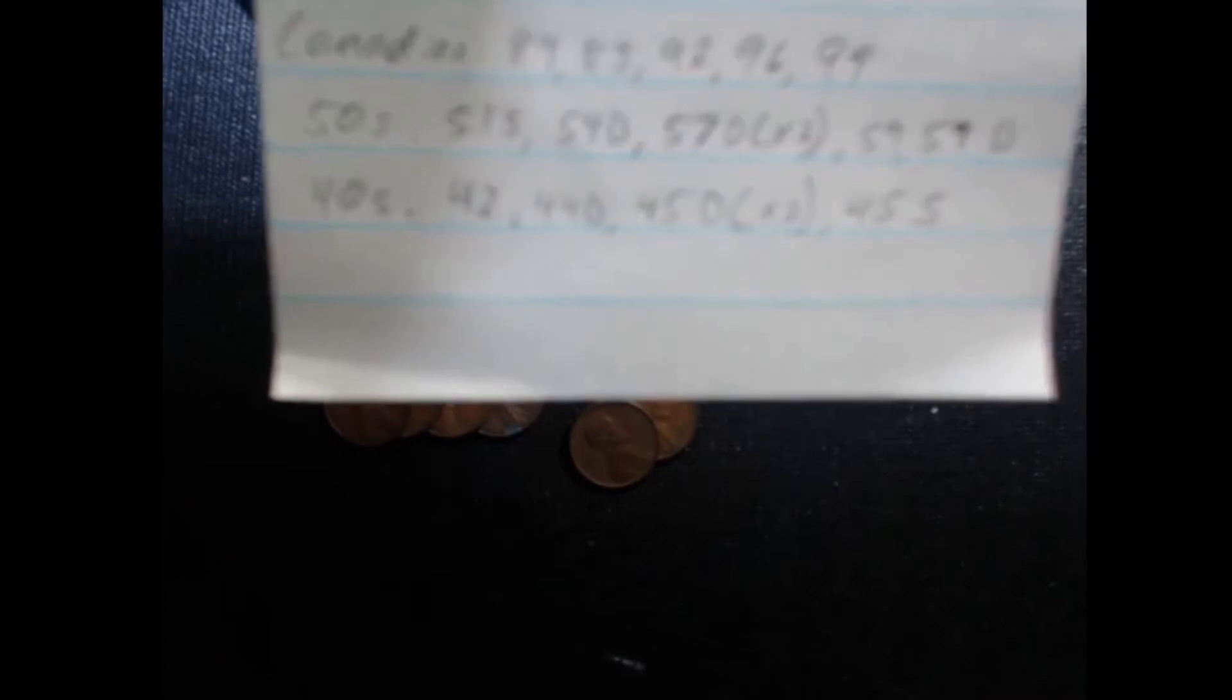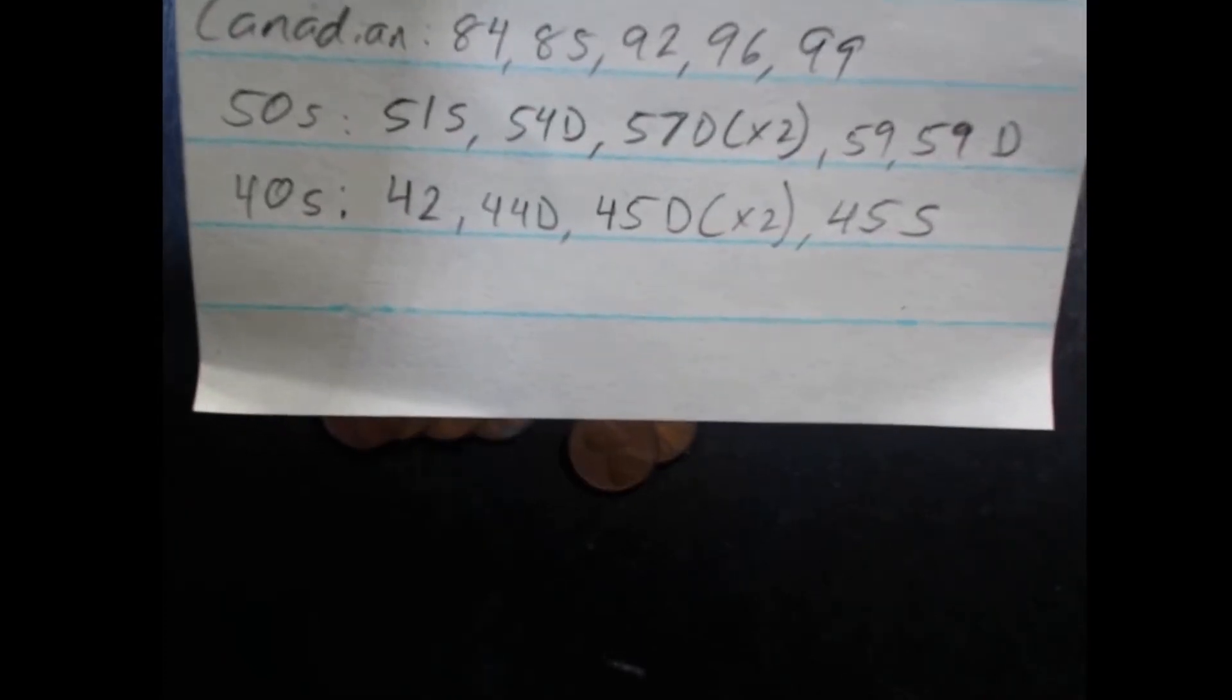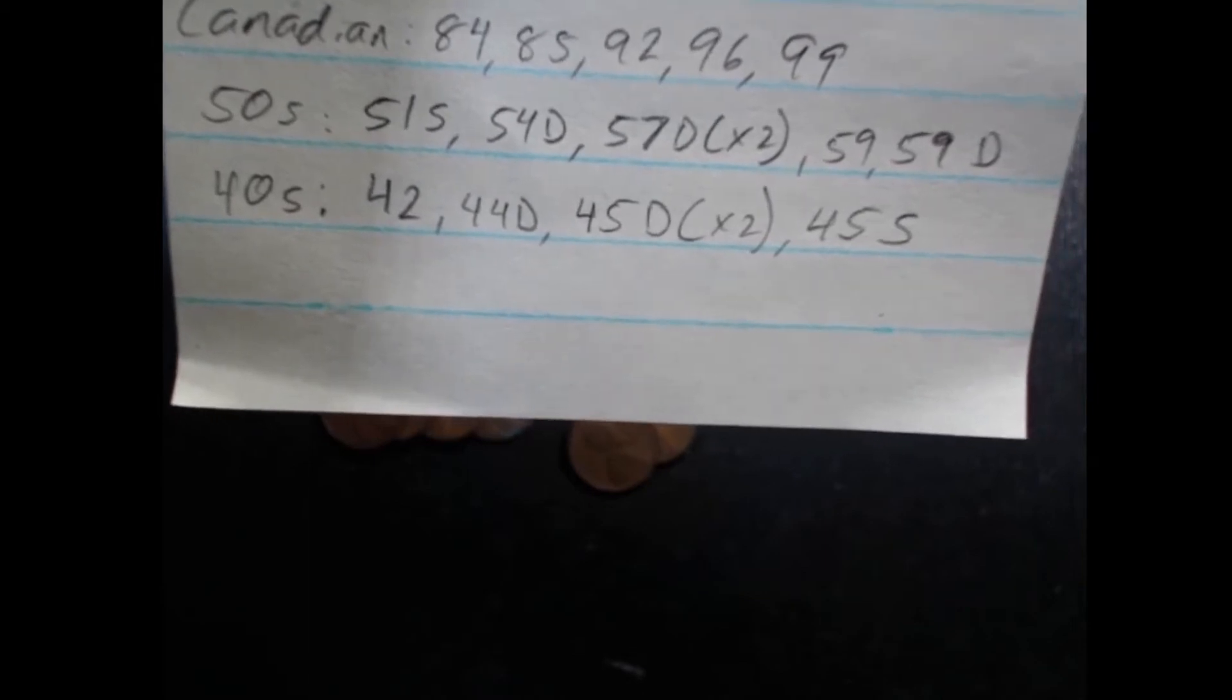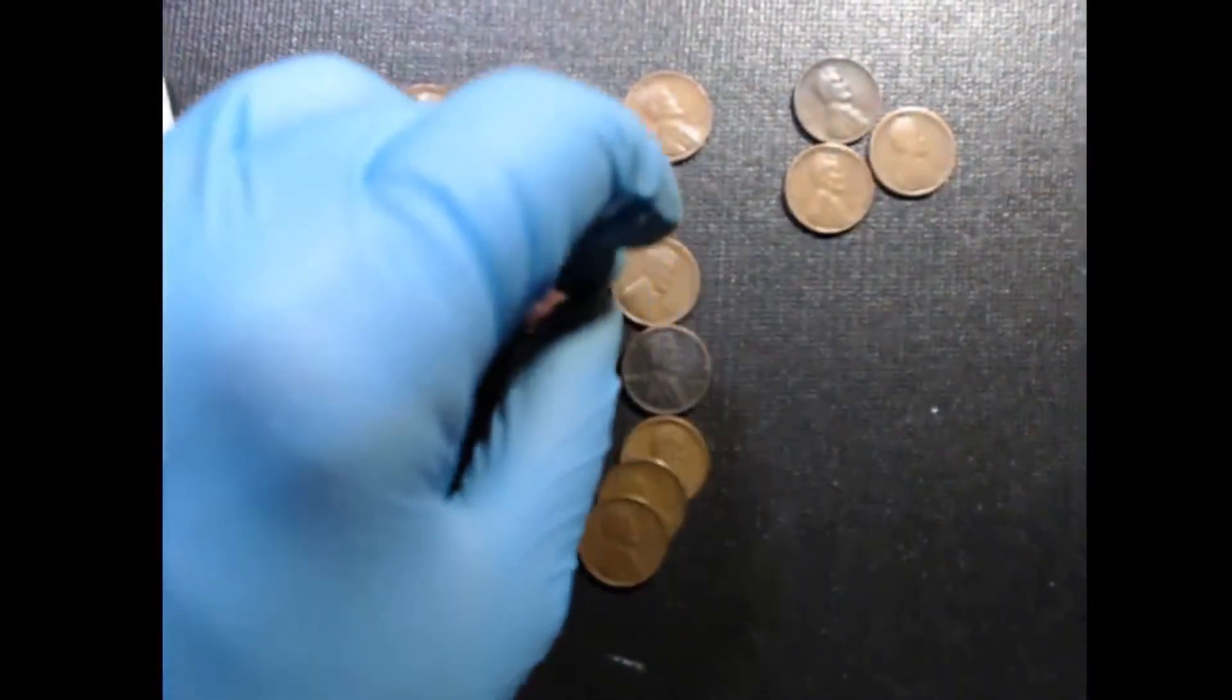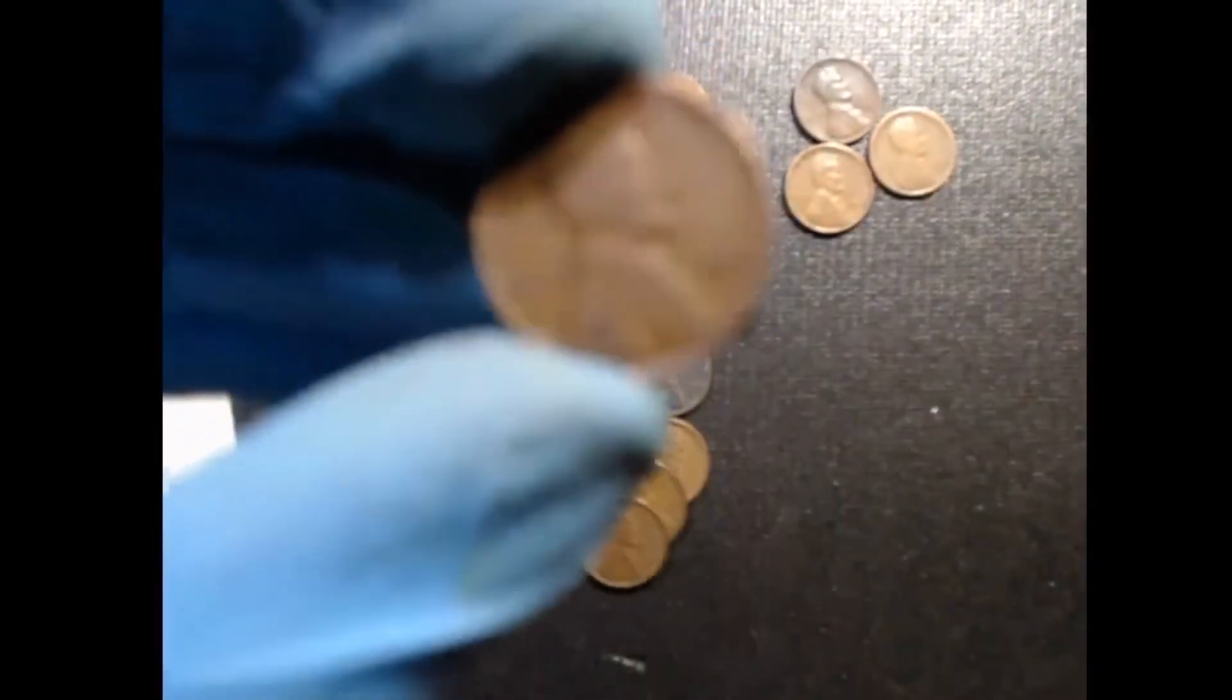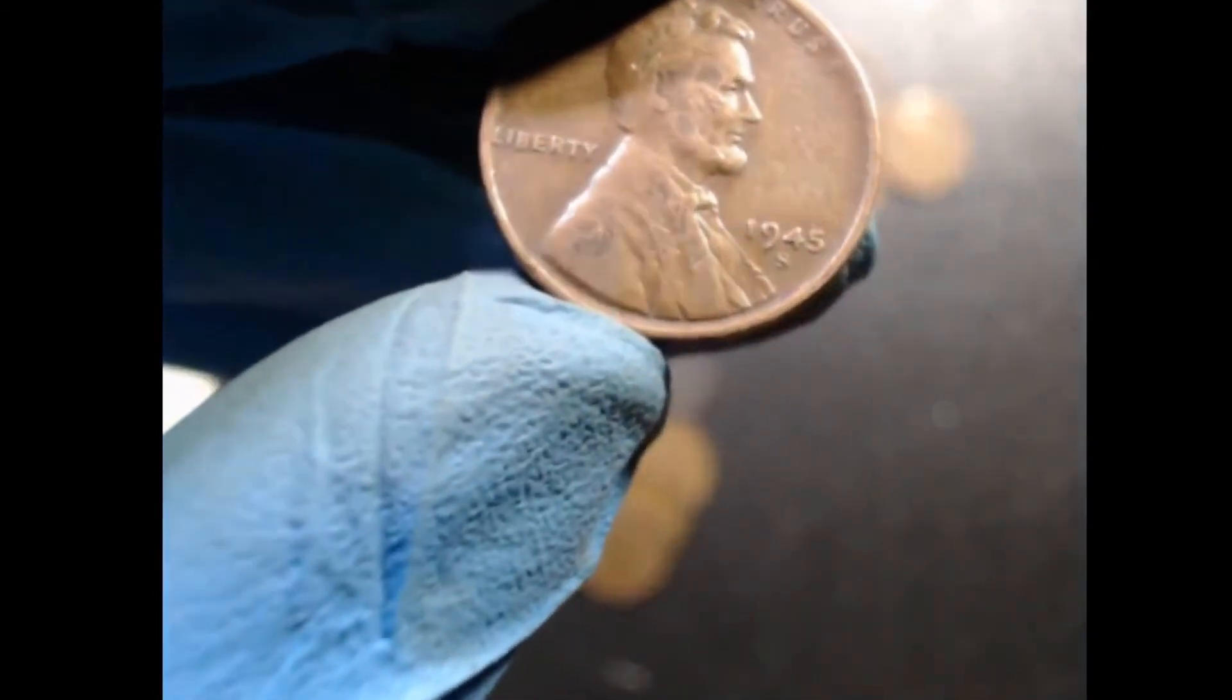In the 40s, there was a 42 Philadelphia, a 44 Denver, two 46 Denvers, and a 45 San Francisco. The San Francisco one, I was kind of surprised about, because I don't normally find S-Mint marks on coins this old.